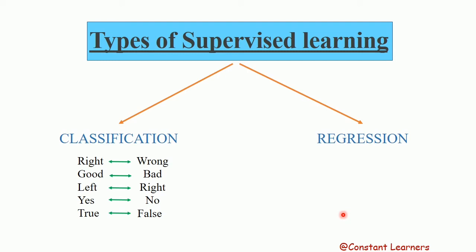In regression learning, we get continuous values. For example, when water is heated, at some temperature it turns warm, then hot, then it starts boiling, and then at some temperature the water will start steaming. That is how we get regression — continuous values. So these are the two types of supervised learning.